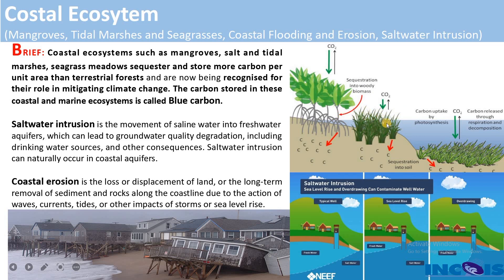Why study the coastal ecosystem and why is it important? It's very important because these coastal ecosystems store or sequester more carbon per unit area than terrestrial forests. Coastal ecosystems like mangroves and tidal marshes are considered crucial for their role in mitigating climate change, acting as buffer zones to absorb and store carbon dioxide. The carbon stored in coastal and marine ecosystems is generally called blue carbon.